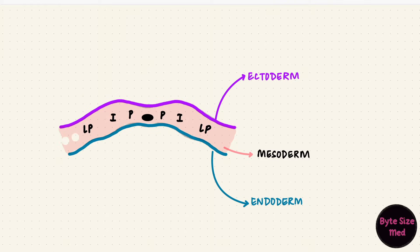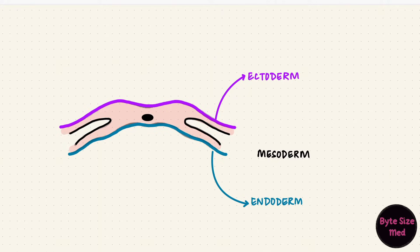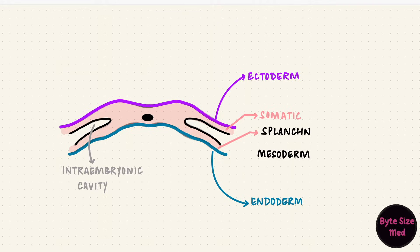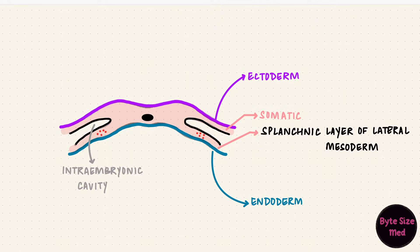The lateral plate mesoderm develops cavities that fuse to form an intraembryonic cavity, which splits the lateral plate mesoderm into two layers: the somatic layer and the splanchnic layer. The heart develops in the splanchnic layer of the lateral plate mesoderm.